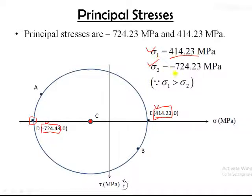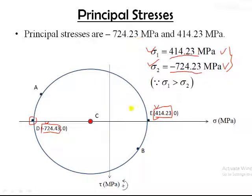The principal stresses are therefore: Sigma_1 (maximum) = +414.23 MPa, and Sigma_2 (minimum) = -724.23 MPa. The maximum value is taken as Sigma_1 and the minimum as Sigma_2. It is important to note that at the principal stress points D and E, the shear stress is zero — there are only normal stresses with no shear stress.